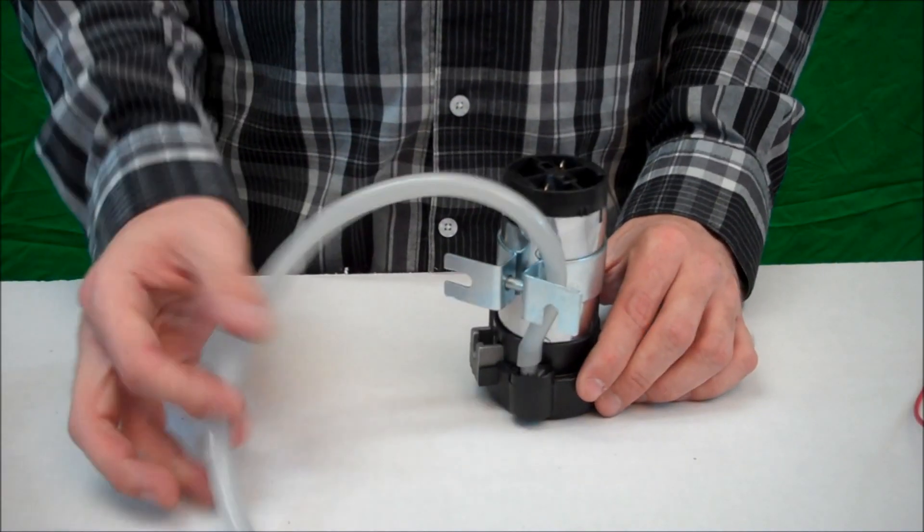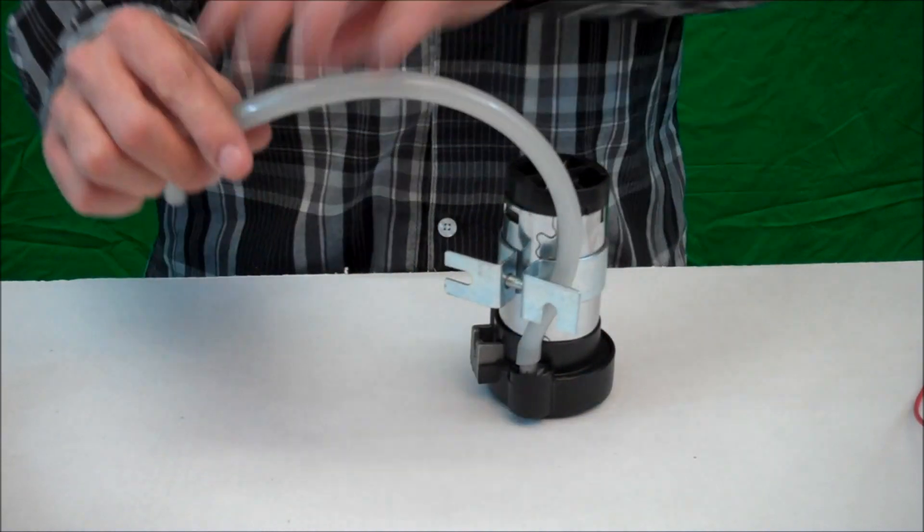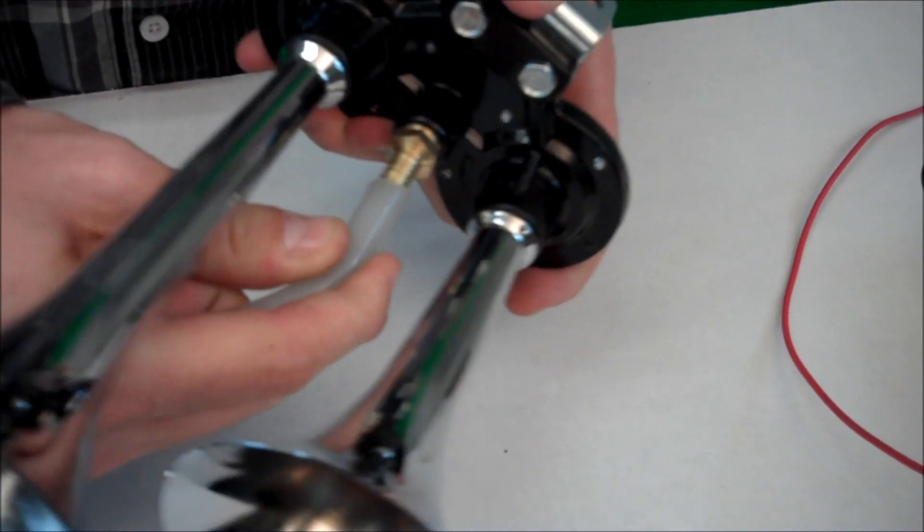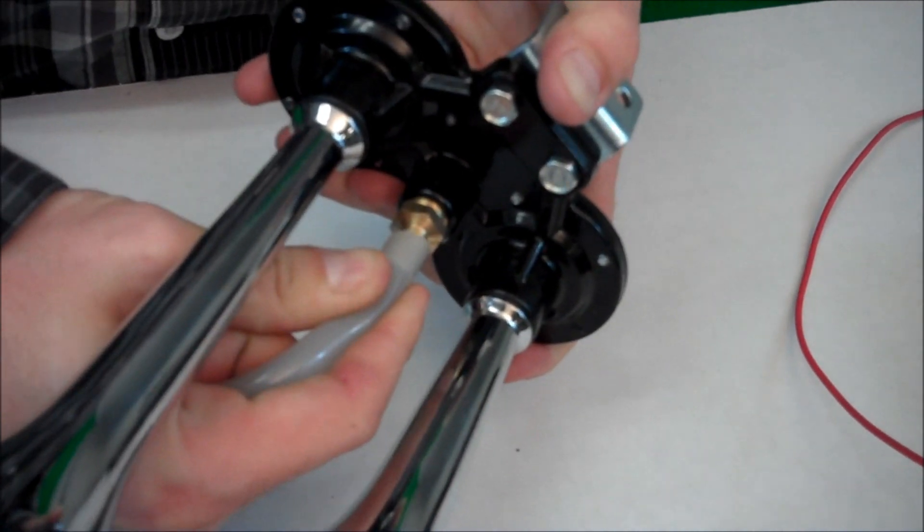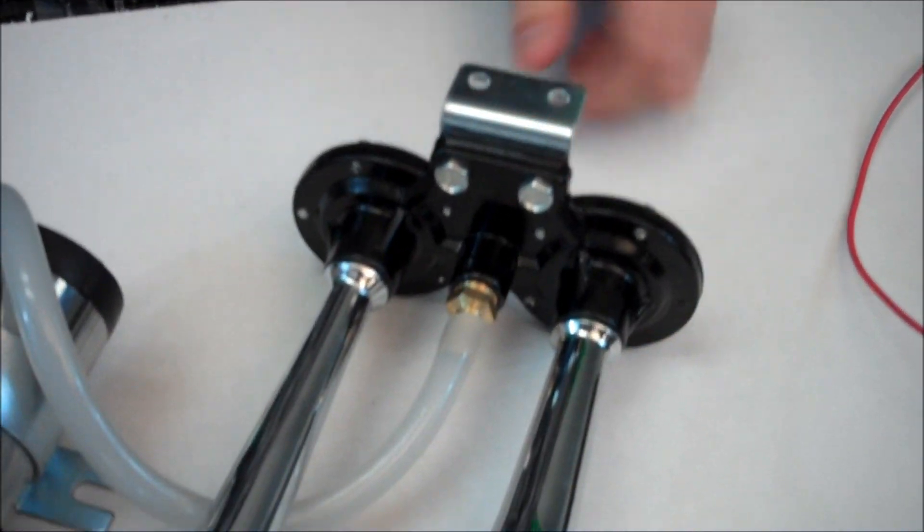The simple installation consists of hooking the air hose up to the actual compressor. Very simple.